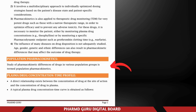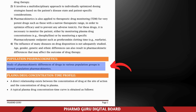Population pharmacokinetics is the study of pharmacokinetic differences of drugs in various population groups. It helps us understand how different groups of people process drugs, leading to more personalized and effective treatments. By studying these differences, healthcare providers can ensure that each population group gets the safest and most appropriate drug therapy.